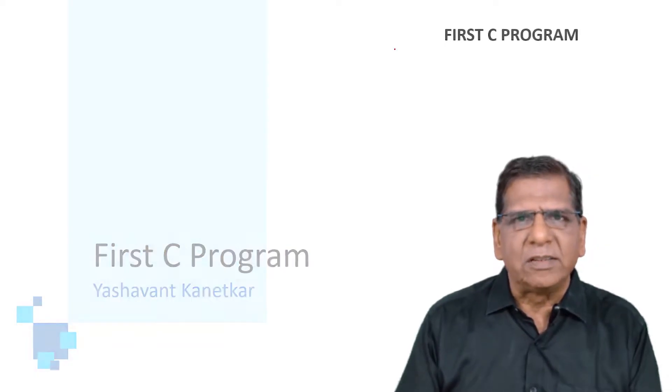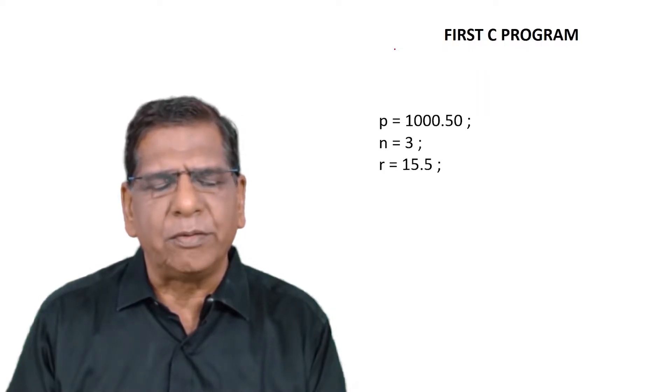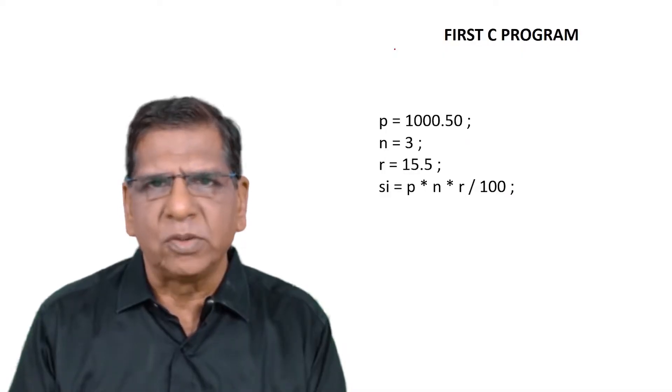We will keep things very simple to begin with. I'll start off with a statement saying P equal to 1000.5, then one more variable n having a value 3 and r holding a value 15.5. Then I would say simple interest equal to P into n into r slash 100. We are using the standard simple interest formula.